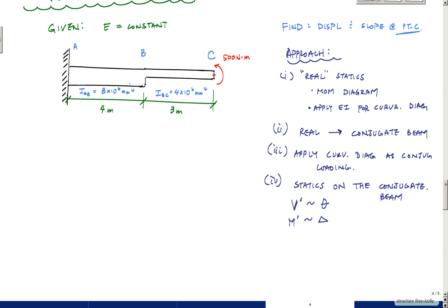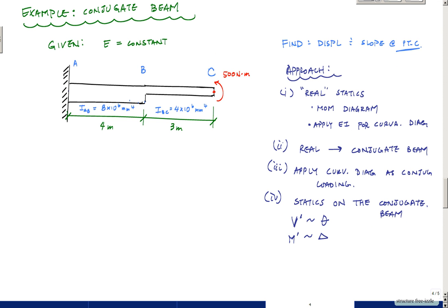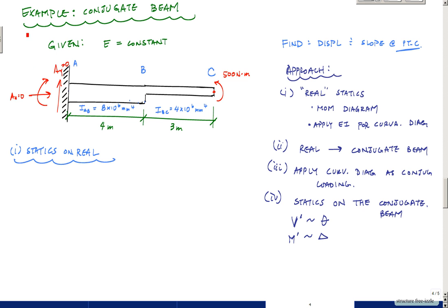Step one is basic statics on the real beam. Calculating reactions is straightforward here. Summing forces in the vertical gives AY equals zero. Summing forces in the horizontal gives AX equals zero. And summing moments gives MA equal to 500 newton meters. That one's a no-brainer.